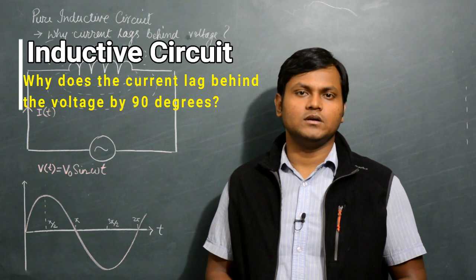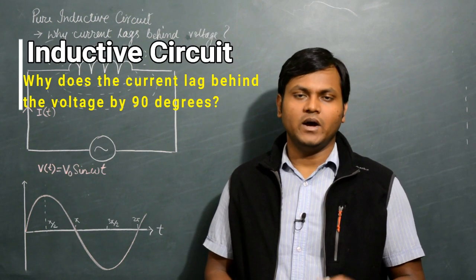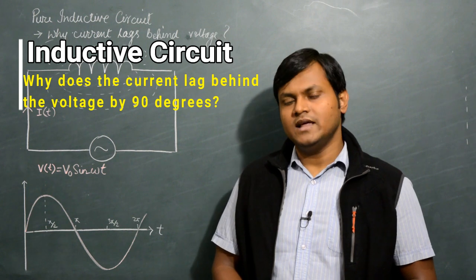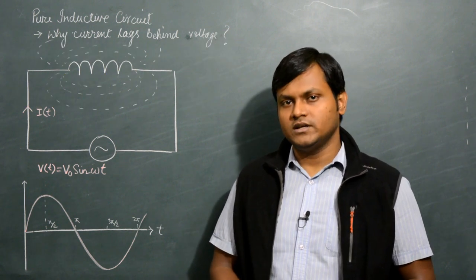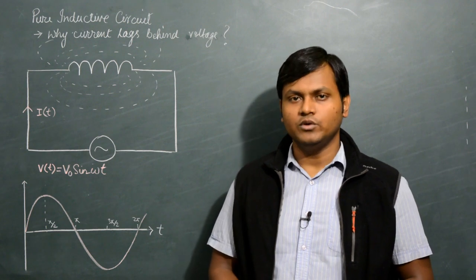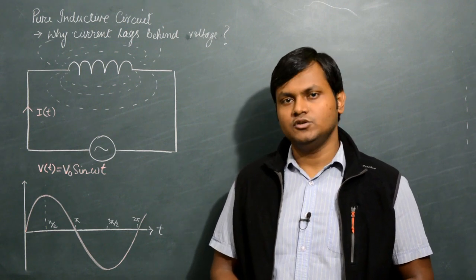Why does the current in an inductor lag behind the voltage by 90 degrees? To understand this, let's look at this particular circuit. We have a pure inductive circuit, which means there is only an inductor attached to a voltage source.